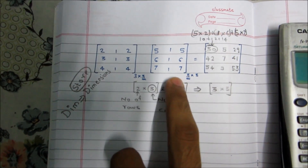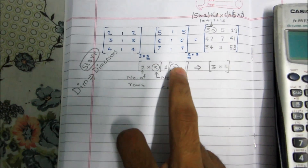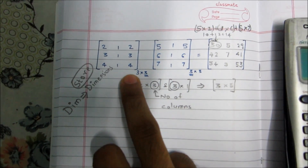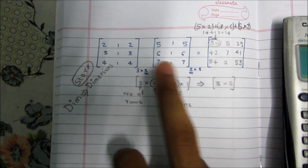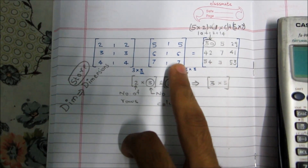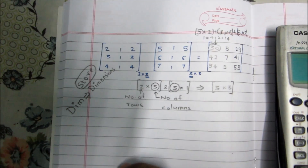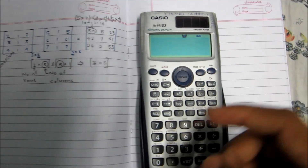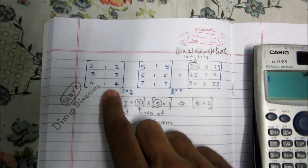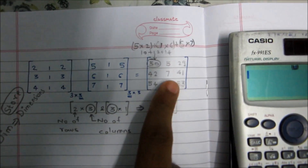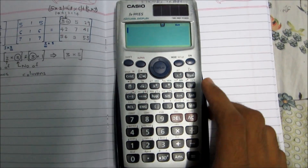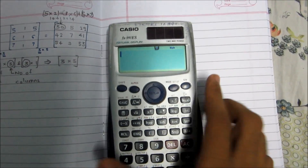For example, three-by-three times three-by-three, or two-by-two times two-by-two. The other dimensions — the number of rows of the first matrix and the number of columns of the second matrix — can be whatever you want. Let's start on the calculator. We'll take this example and here's the answer — let's see if that matches.